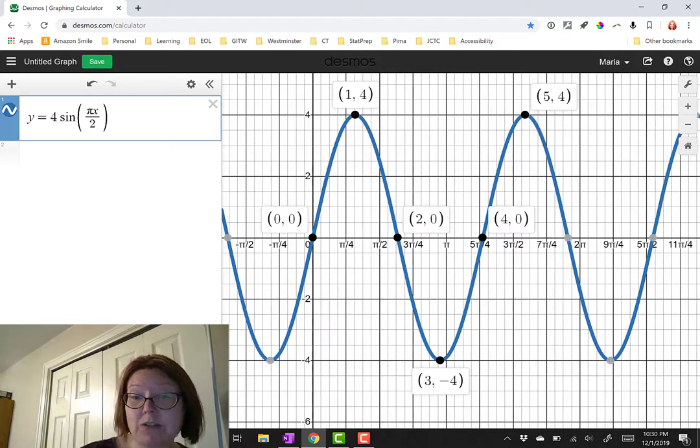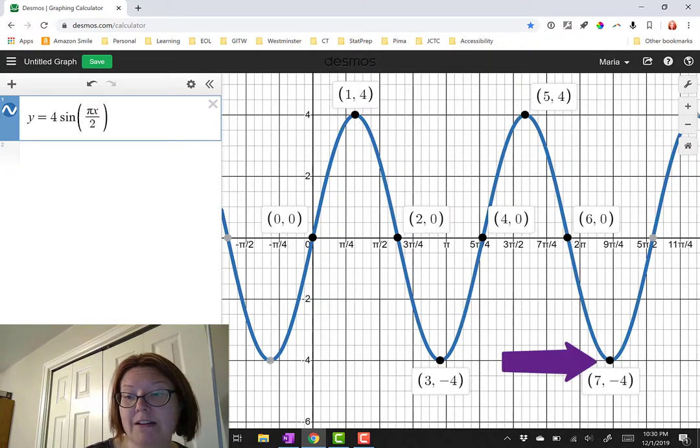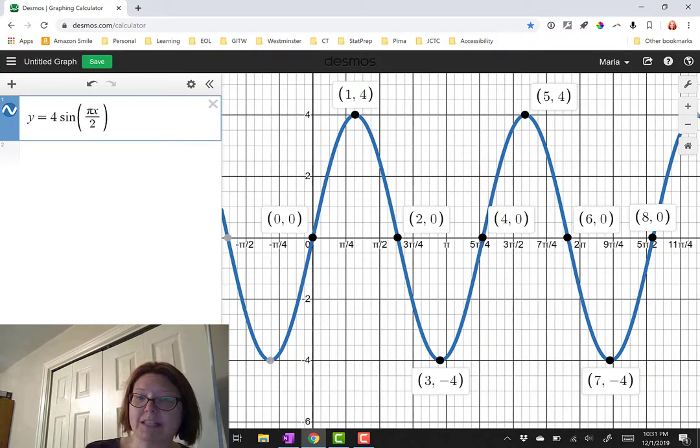That's essentially where we're starting to see a repeat of the maximum. And then it goes back down through 6, 0, 7, negative 4. Back up to the axis of 8, 0.